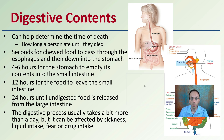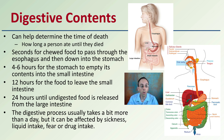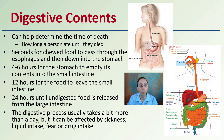First off, the digestive contents. These can help determine the time of death by determining how long it was from when the person ate until they died. It only takes seconds for chewed food to pass through the esophagus down to the stomach, four to six hours for the stomach to empty its contents into the small intestine, about 12 hours for the food to leave the small intestine, and 24 hours until undigested food is released from the large intestine. This digestive process usually takes a bit more than a day, but can be affected by sickness, liquid intake, fear, and any drugs the person may have consumed. Keep in mind these potential variables when examining the digestive contents of an individual.